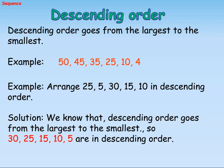Descending Order. Descending order goes from the largest to the smallest. Example: 50, 45, 35, 25, 10, 4.